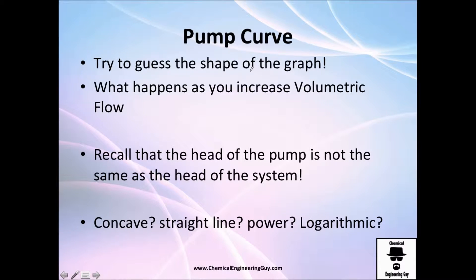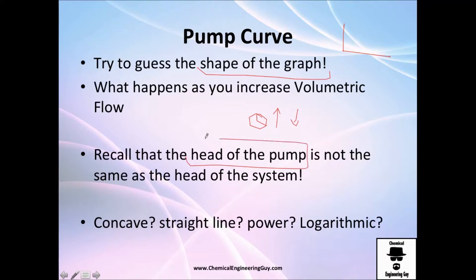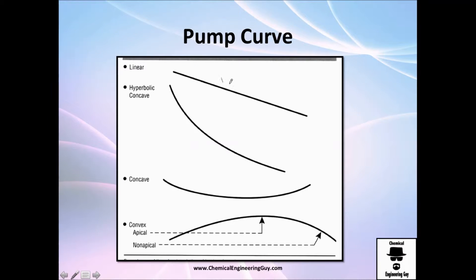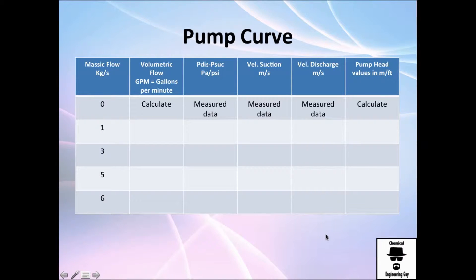Before actually drawing the curve, I want you to try to imagine the shape of the graph — what will happen if you increase volumetric flow rate, and what if you decrease it? Remember, we are calculating the pump head, not the system head — this is a very important concept. Will the graph be concave, a straight line, a parabola, or logarithmic? To determine this, you'll need to do the balance at the pump suction, convert mass flow to various volumetric flow rates, then calculate the suction and discharge conditions.